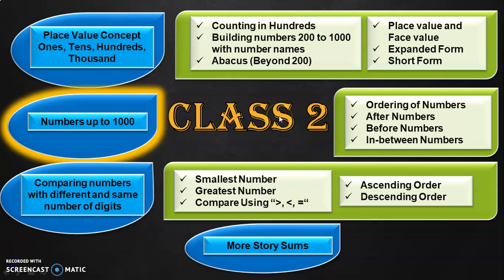In Class 2, we will be dealing with three-digit numbers starting from 100 to 1000, split into two phases. In the first phase we will be dealing with numbers 100 to 200, and in the second phase we will be dealing with numbers 200 to 1000. In my channel I have dealt with the first phase — 100 to 200 numbers — and all the place value concepts and other learning outcomes in separate videos. Now let us look at what number activities we are going to perform in numbers 200 to 1000.